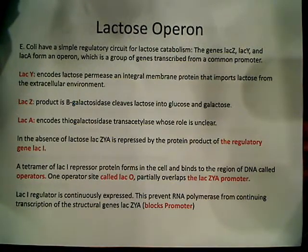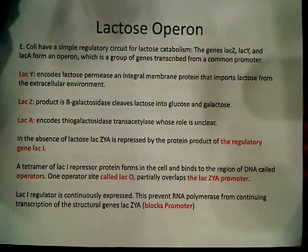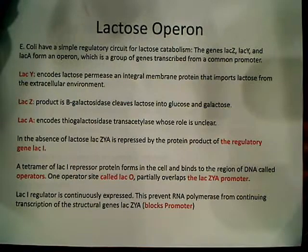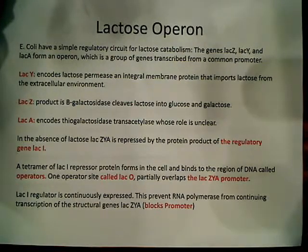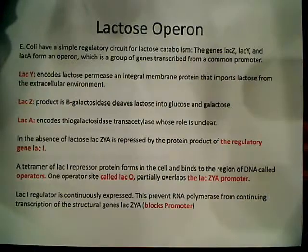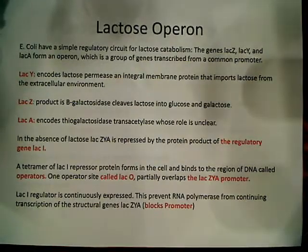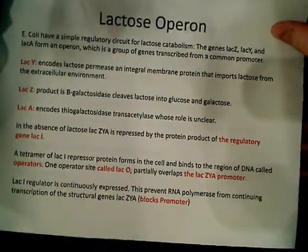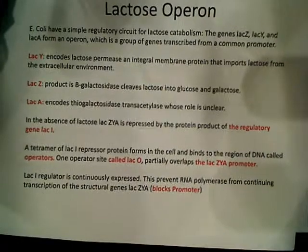In the event that glucose is absent and lactose is present, then we're going to see that this operon actually starts working. The RNA polymerase cannot transcribe the structural genes because this repressor protein blocks the promoter region.